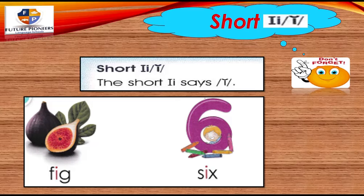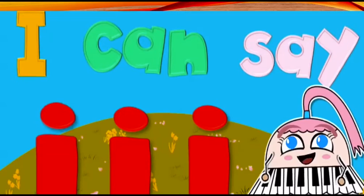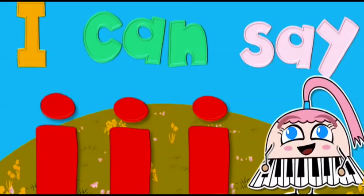Let's go to the next word. Short I, I, I — g, g, g. So this is six. This is number six. I can say I, I, I. So this is the sound of short I.